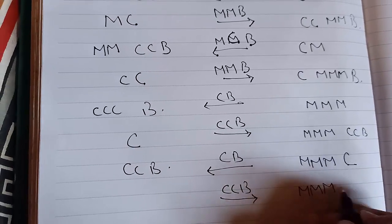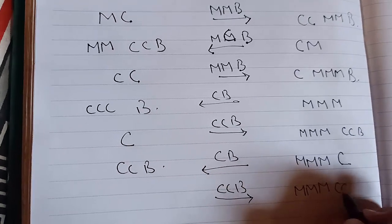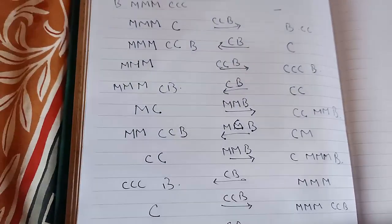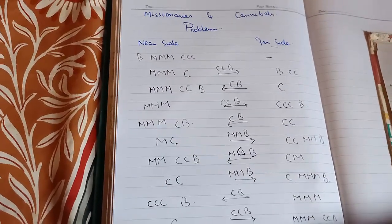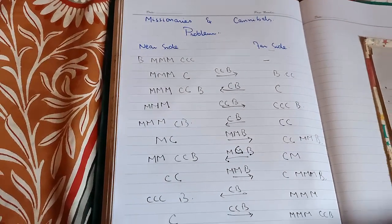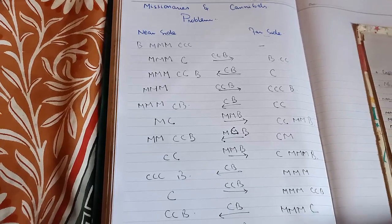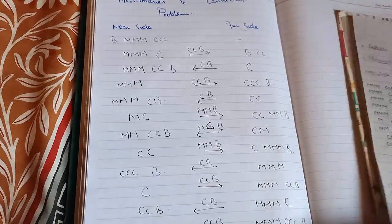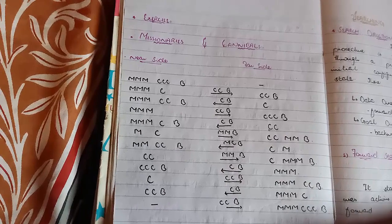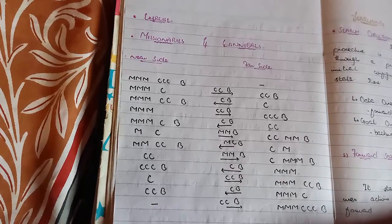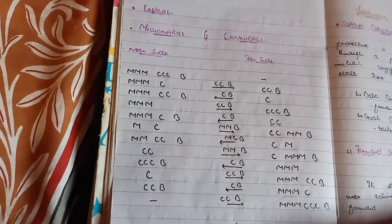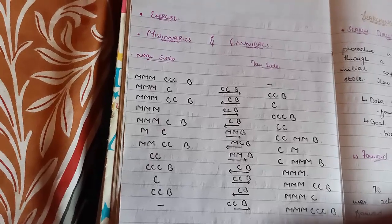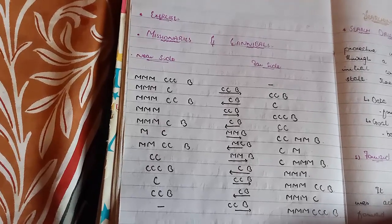Three missionaries, three cannibals, and one boat. So in this way you can solve the missionaries and cannibals problem. I hope you understand it. If you like this video please hit the like button and don't forget to subscribe to our channel for more videos like this.